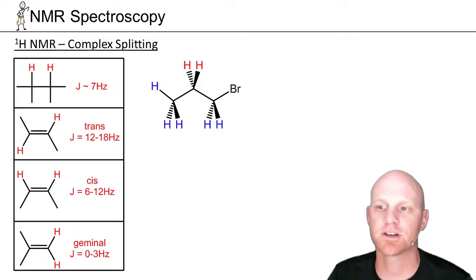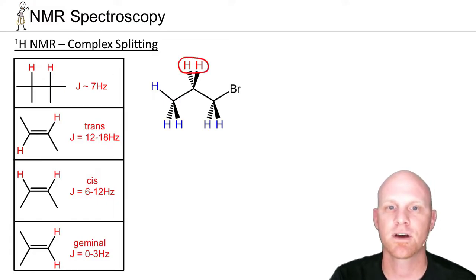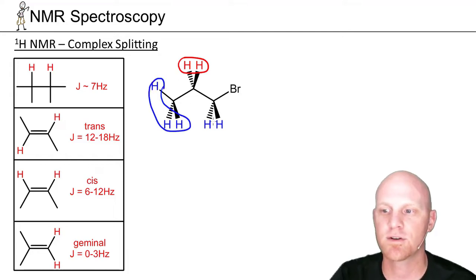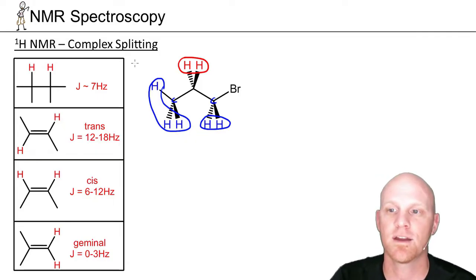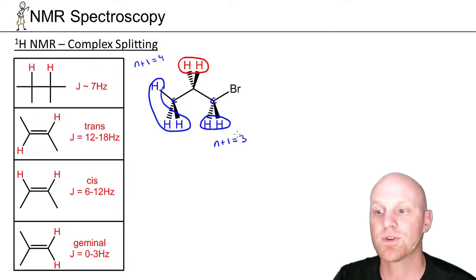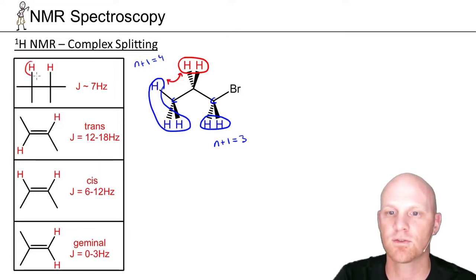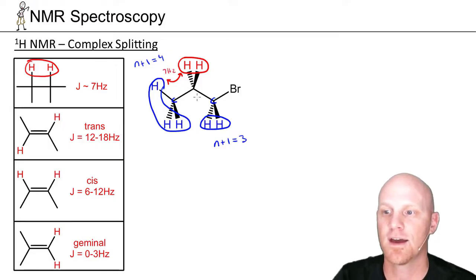This last example of complex splitting shows that sometimes we don't even notice complex splitting has occurred. But again, anytime there are multiple sets of non-equivalent neighbors, complex splitting is taking place. We're going to look at the signal for two hydrogens that have two non-equivalent sets of neighbors: three equivalent hydrogens on one side and two hydrogens on the other adjacent carbon. Applying N+1 to each side: three plus one gives four peaks, and two plus one gives three peaks — so 4 times 3 is 12 possible peaks.